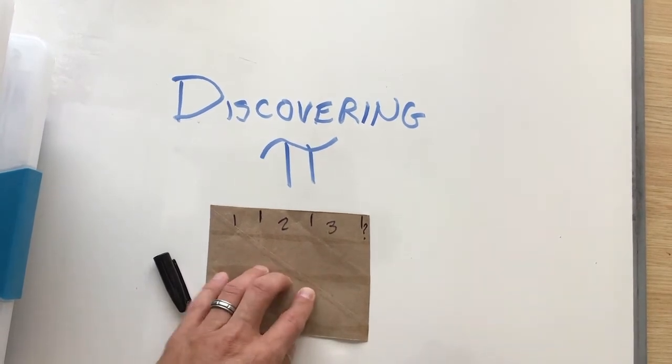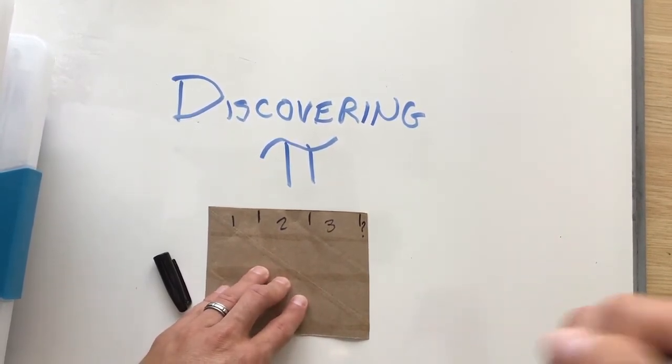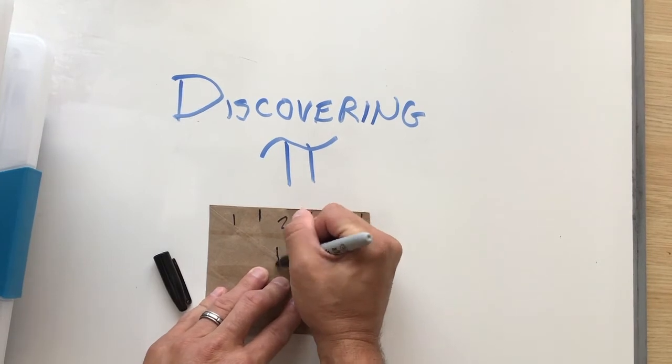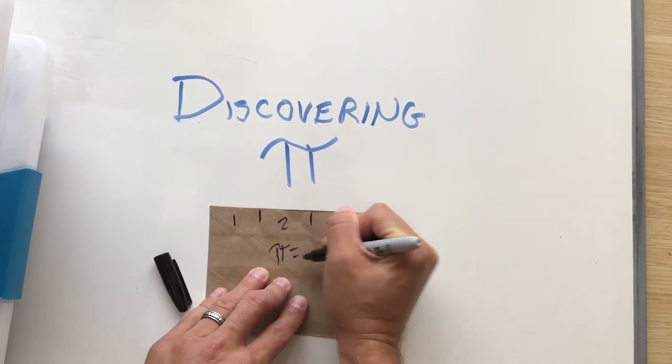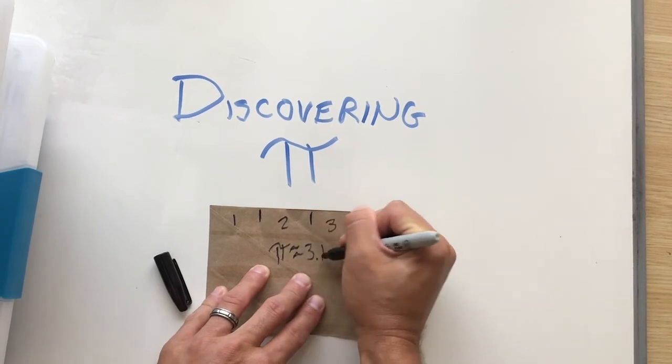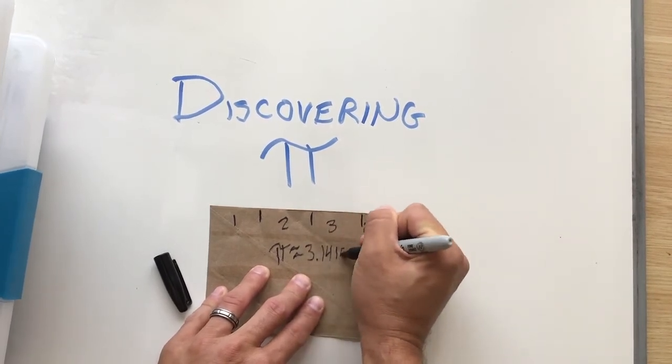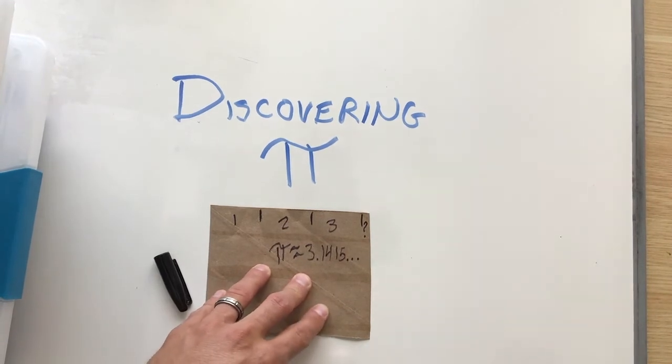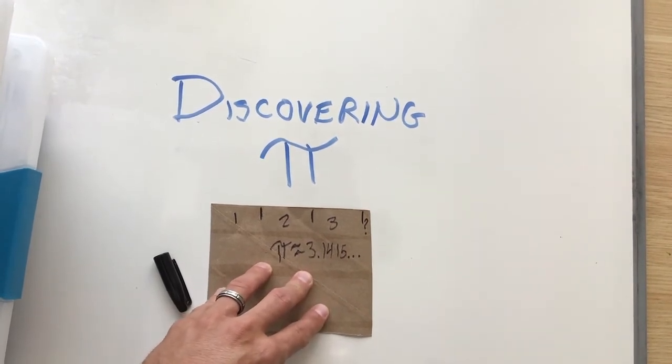It turns out that little more ends up being an irrational number, and this is where pi comes from. So pi is approximately 3.1415 on and on and on. But any circle that you can unravel, this relationship works.